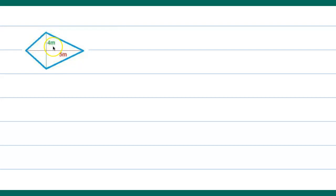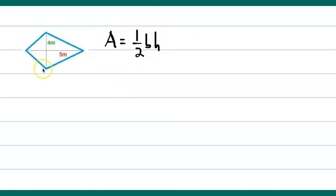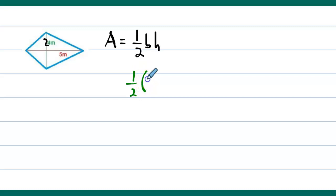We can find the area of one triangle and then, since there are two of them, multiply by two. Since the formula of a triangle is one-half base times height, we use this formula. This side is four, so we break it in half — this part is two and this part is two. Substituting the values, we take the base as two and the height as five.